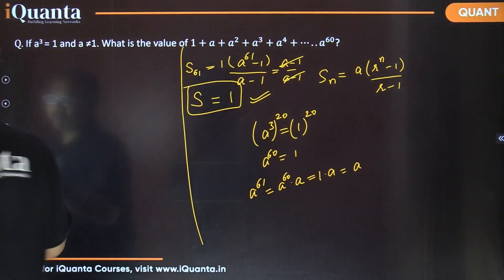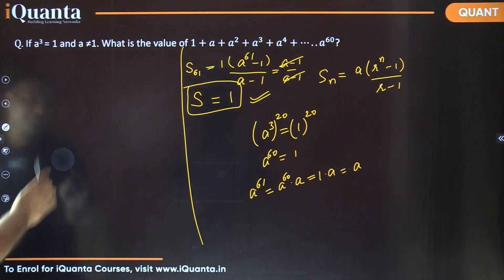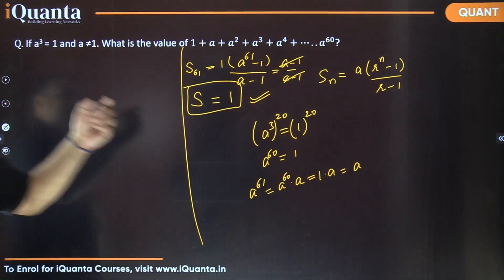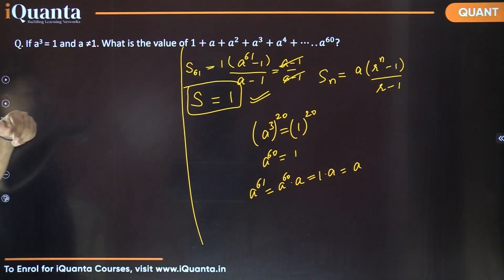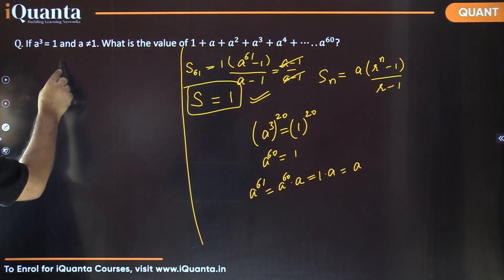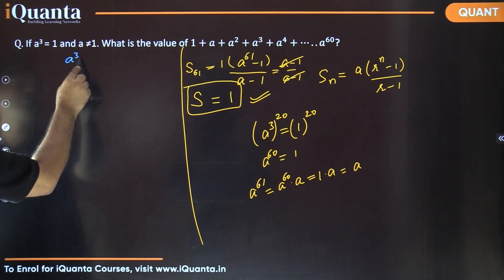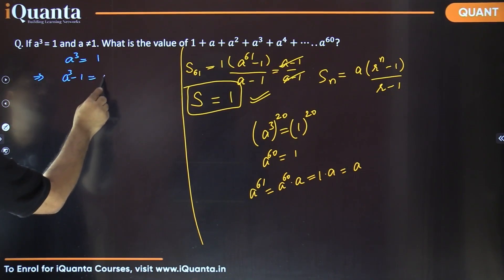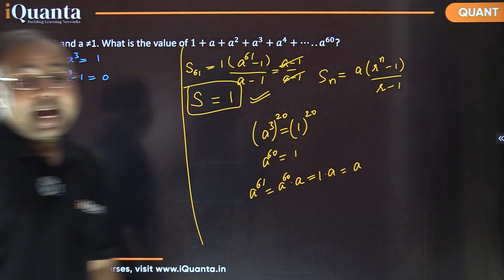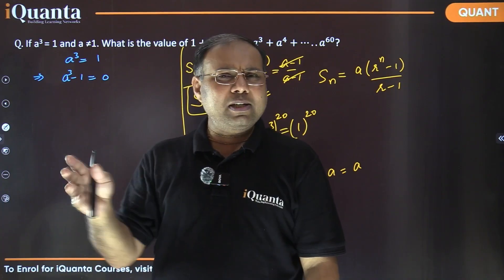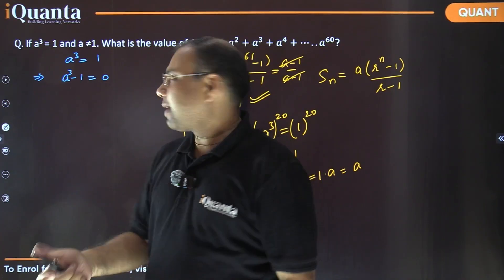Let's look for an alternate way. Instead of using the sum of the series, let's try to understand the meaning of a³ = 1 when a ≠ 1 — what other values can a take? When a³ = 1, it means a³ − 1 = 0.